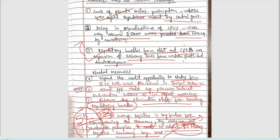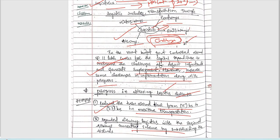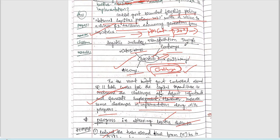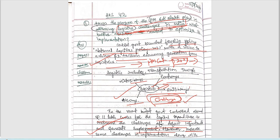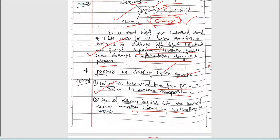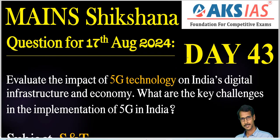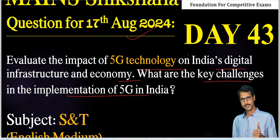Try to write in separate white pages — then it will look very good and the answer will appear very special. Coming to the main section of free initiative, Day 43, question from 17th August 2024: evaluate the impact of 5G technology on India's digital infrastructure and economy. What are the key challenges in the implementation of 5G in India? That is related to our science and technology subject — a very important topic. Write your answers and upload in the Resolved AKS app. Thank you very much and all the very best.